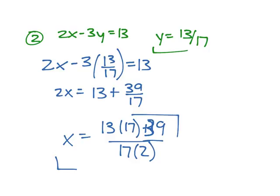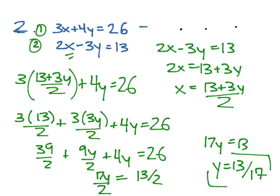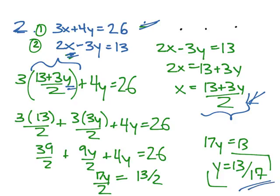To revise: solving systems of linear equations with substitution — you choose a variable, you solve that equation in terms of that variable, then you plug what you've solved into the other equation. That should give you an equation in one variable, which you can solve using algebra. Then you substitute that back into the first equation, and there you go.